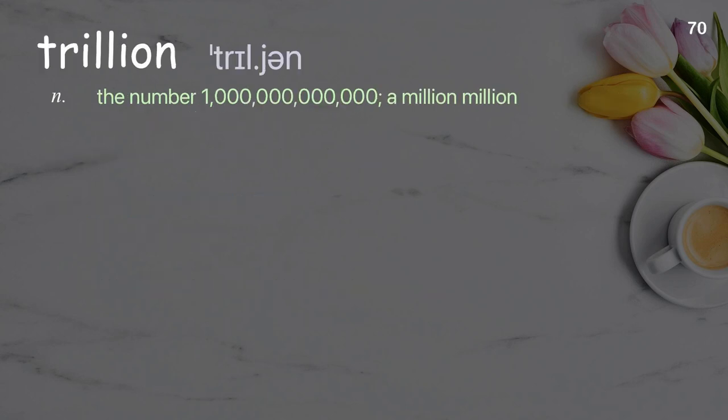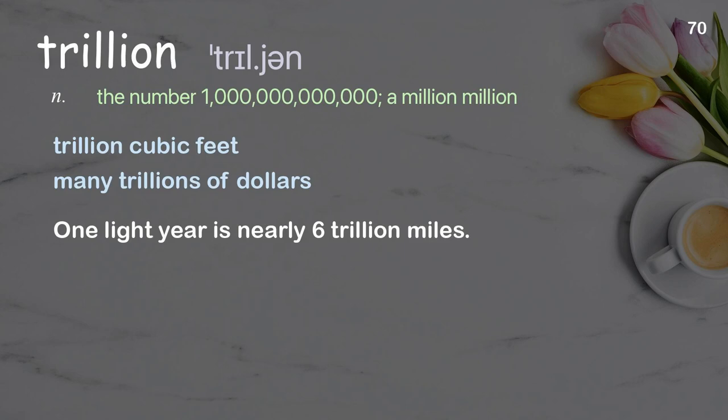Trillion: the number one trillion, a million million. Examples: trillion cubic feet, many trillions of dollars. One light year is nearly 6 trillion miles.